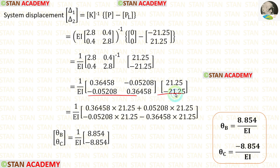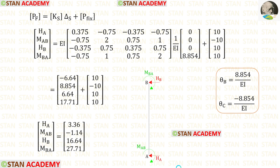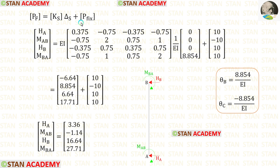Now let us find the final moments and reactions. First, for column AB, we apply the element stiffness matrix. In the delta matrix, since point B has the first coordinate with moment MBA, we apply the value of theta B there and 0 for all other entries. Adding the fixed end moments and reactions we found initially, after calculation we get the reactions and moments in column AB. For MAB, we get a negative value, meaning our assumption was incorrect — MAB is actually acting in the anti-clockwise direction.